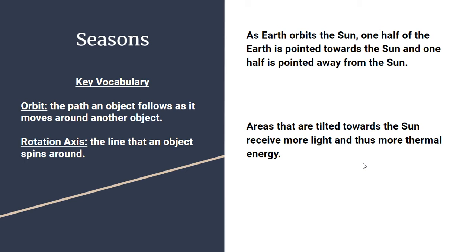As the Earth orbits the Sun, one hemisphere — either northern or southern — is pointed towards the Sun and the other is pointed away. Areas tilted towards the Sun receive more light, and that light is more intense, more direct, more straight-on, which creates more thermal energy — more heat.